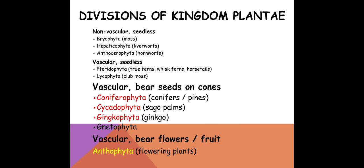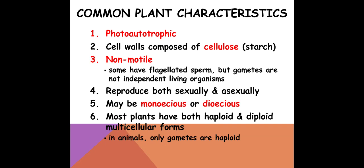Just something to note: last time we looked very briefly at hornworts, our anthocerophyta, but that is not the same as anthophyta. So when you're doing your lab worksheet or taking your lab quizzes, be sure to write the one that you mean. If you mean flowering plants, you mean anthophyta. Some common characteristics of plants — they are photoautotrophic, so they do photosynthesis to make their own food. Their cell walls are made of cellulose or starch. They are non-motile; plants do not move. Even though they may have flagellated sperm, gametes are not considered independent living organisms, so as a whole, plants are non-motile.